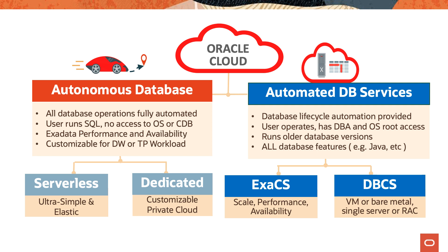These automated database services include all database features. This line of services includes Exadata Cloud Service for scalability, performance, and availability, as well as the Database Cloud Service with virtual machine or bare metal as a single server offering, or you can cluster virtual machines as a Real Application Clusters.